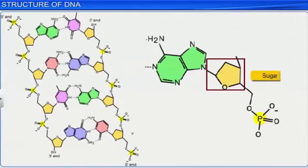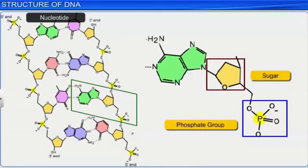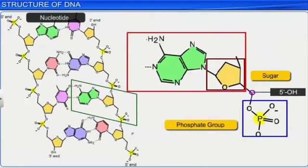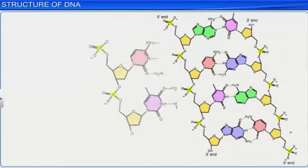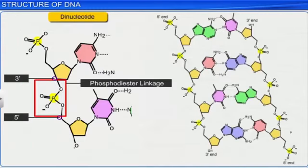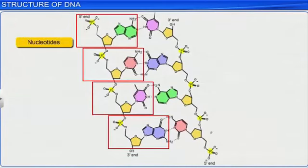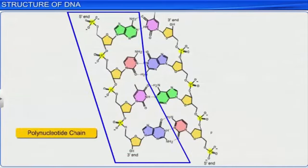Depending on the sugar present, a nucleotide or a deoxynucleotide is formed when a phosphate group is linked to the 5' OH of a nucleoside through the phosphoester linkage. A dinucleotide is formed when two nucleotides are linked through a 3'-5' phosphodiester linkage, and several such nucleotides can join similarly to form a polynucleotide chain.